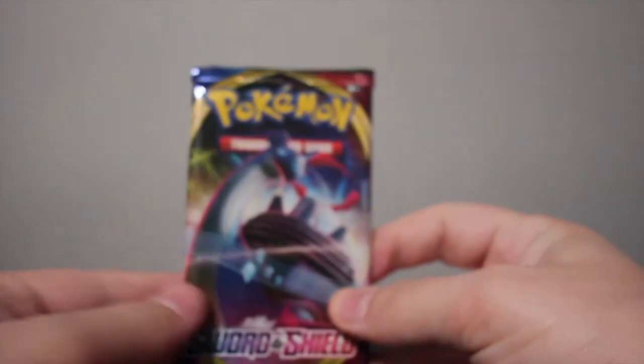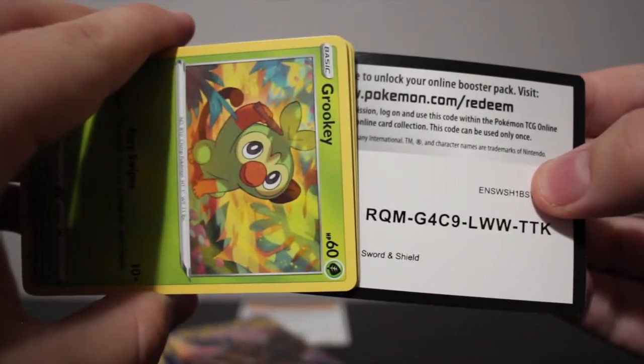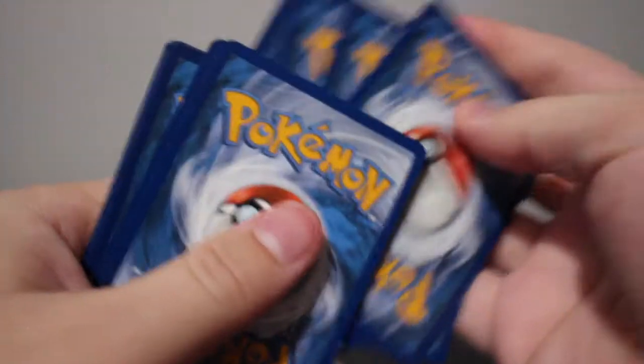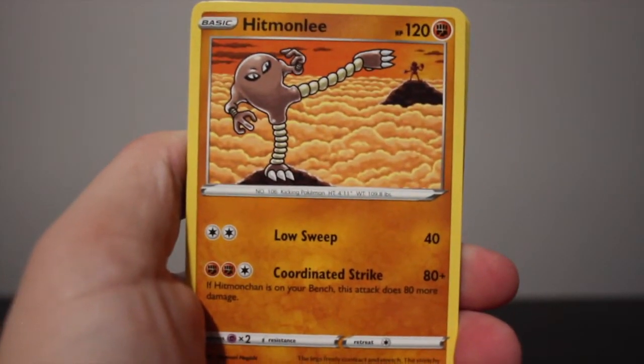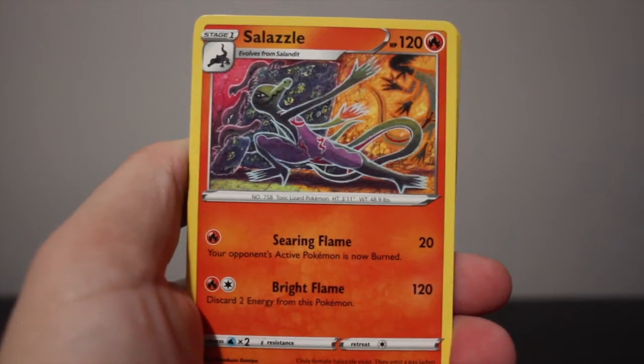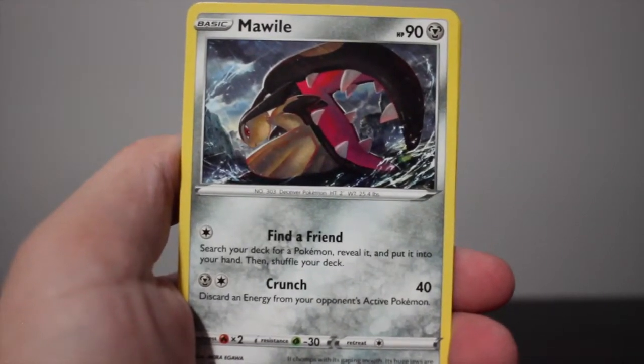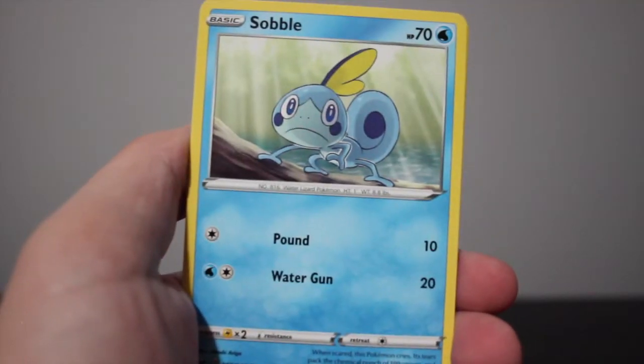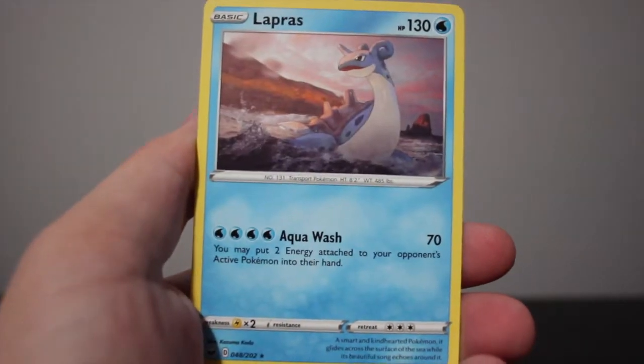Alrighty, pack number three. Timburr, Hitmonchan, Slazzle, Grookey, Shellder, Mawile, Vanillite, Sableye, a reverse Raboot, and a Lampent.